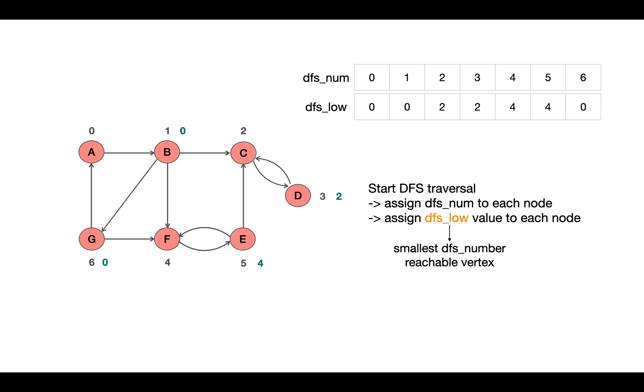Now you might guess from here that the nodes having the same low vertex value must be part of same strongly connected component, right? But that's not always the case.